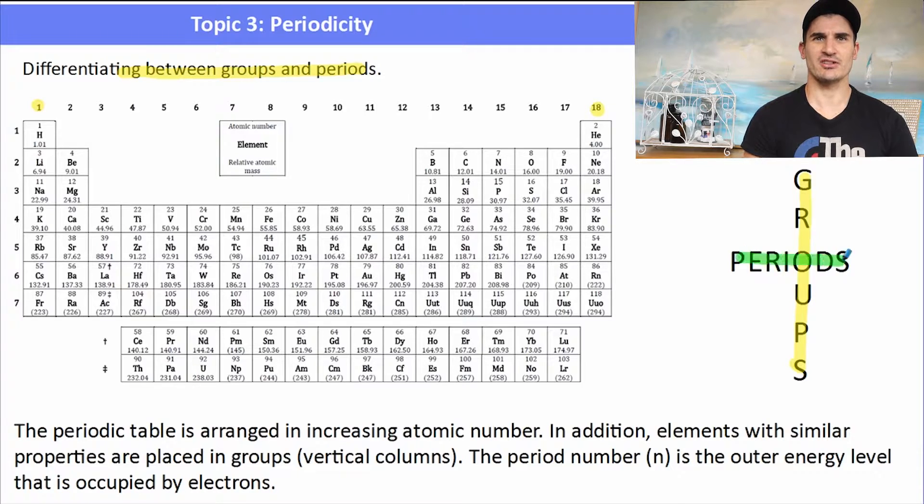The periodic table is arranged in increasing atomic number, but it's also arranged in electron configuration as well. So it's arranged based on the number of protons, but because the patterns in electron arrangement repeat, it's also arranged on the electron configuration. The lanthanides and the actinides, if you can imagine just pushing the periodic table apart, they will fit into those two locations.